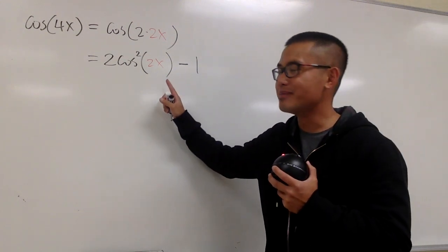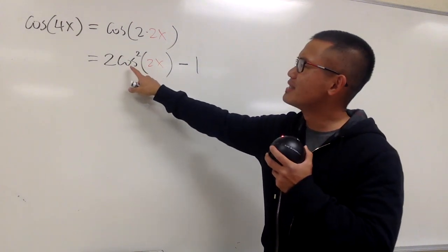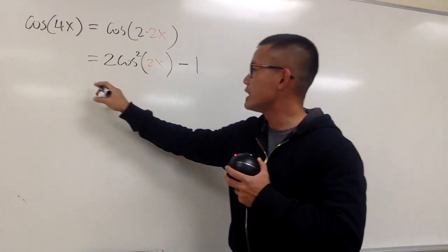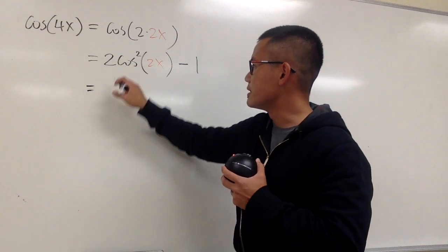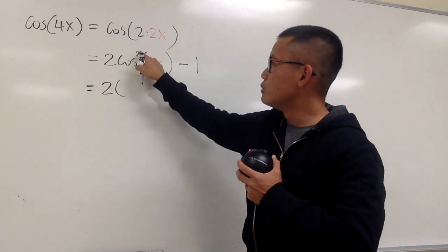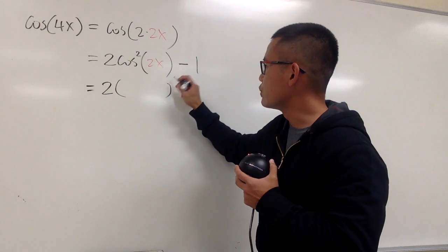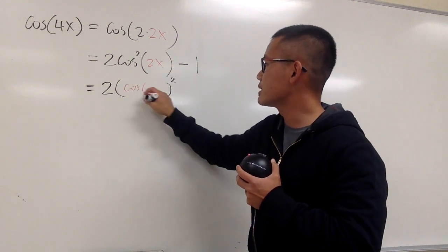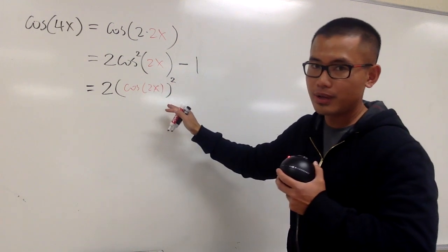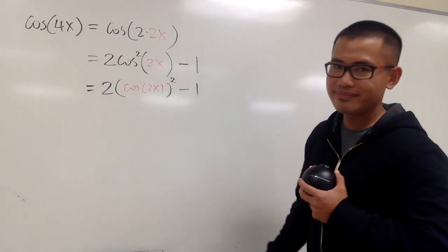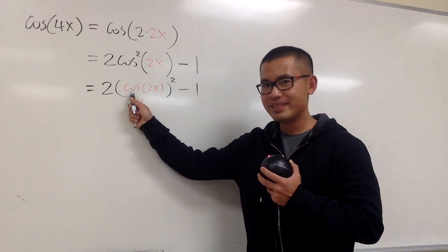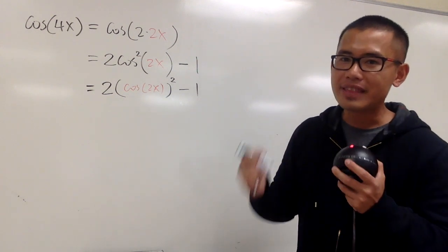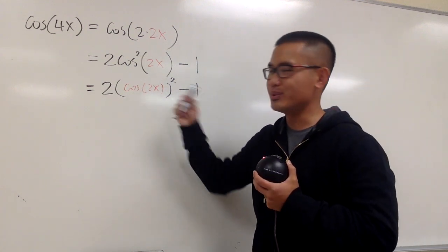We are technically almost done, because as we can see, this is cosine squared, but inside is, unfortunately, a 2x. So this is the same as saying 2 times cosine of 2x, to the second power, and then minus 1 at the end. And look — this is cosine of 2x, and once again we have to use the double angle identity for cosine of 2x.